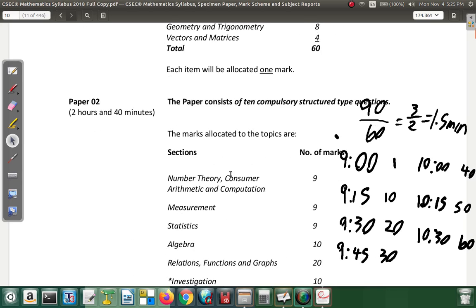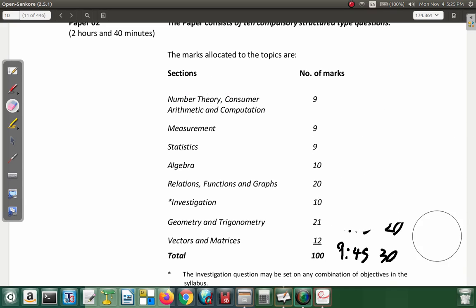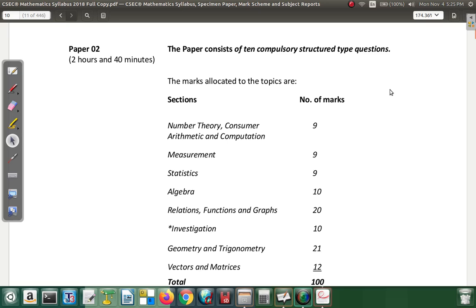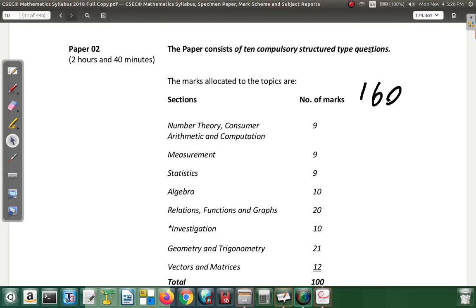Let's look at Paper 2 that's done in the afternoon. You have 2 hours 40 minutes to answer Paper 2. What that means, you basically have 160 minutes—that's 120 minutes plus 40. You have 160 minutes to answer 10 questions. This paper consists of 10 compulsory structured type questions. If you should start on time, what that would mean is that you have 160 over 10, which is 16 minutes per question. However, it's not so straightforward.